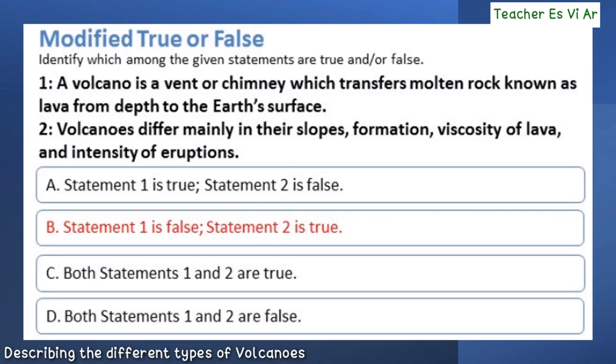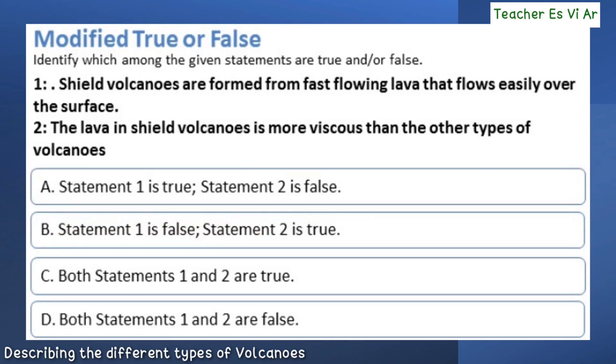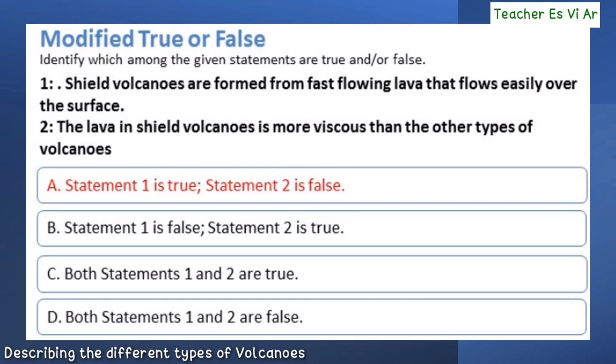The correct answer is letter B: statement one is false, statement two is true. The correct answer is letter A: statement one is true, statement two is false.